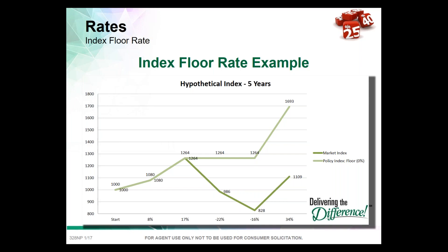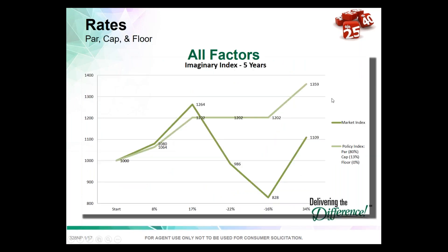This minimum return creates a ratcheting, annual reset type of thing. If the index goes down 22%, I'm still starting at that 1,264 point. If the index goes down 16%, I'm still starting at 1,264. So when the index goes up 34%, the client can get all that upside. The floor effectively locks in gains and prevents losses from eroding the base.